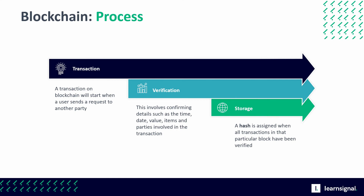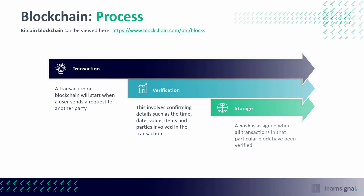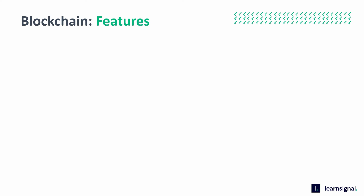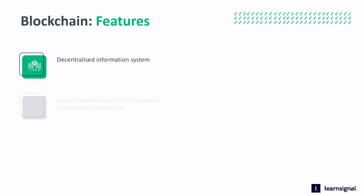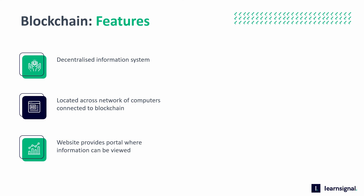Once a block is added to the chain, it will be in the public domain and it can be viewed by anyone online. For example, the Bitcoin blockchain can be viewed on the website shown below. However, the website is not where the blockchain itself is physically located. The key feature of blockchain technology that distinguishes it from traditional information systems is the fact that it is decentralized. This means there is no underlying definitive copy of the blockchain held in a central location. The blockchain website provides a portal where information about the blockchain can be viewed, but it does not allow visitors to join the blockchain, nor does it allow transactions to take place.